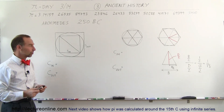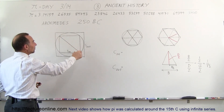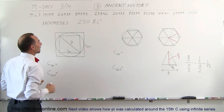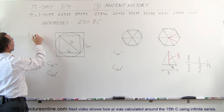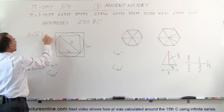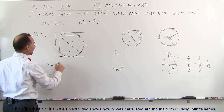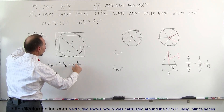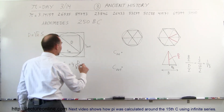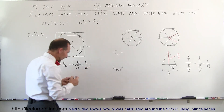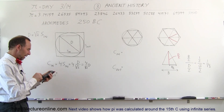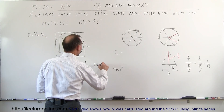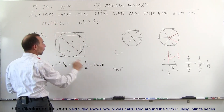Here you can see that the diagonal of the inscribed square is equal to the diameter of the circle. The diameter equals the square root of two times the side length inside. So the inside circumference equals four times the inside side, and the side equals diameter divided by the square root of two. That means the inside circumference equals four divided by the square root of two, times the diameter — which gives us 2.828 times the diameter. Compared to Pi (3.14), that's really not a bad estimate.